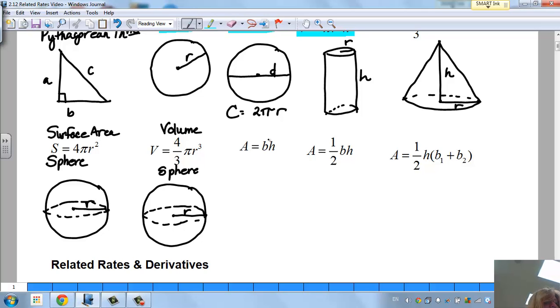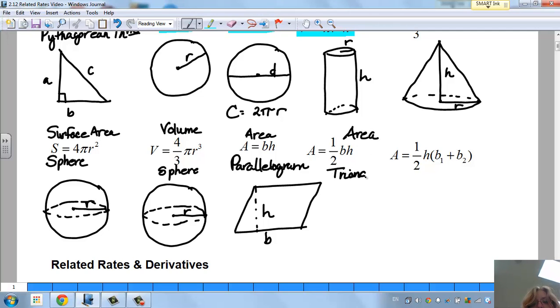A equals base times height. We're talking area here of a parallelogram. A rectangle is a parallelogram. Here's the height here and the base here. Then we have one half base times height, so this is an area relationship or area formula of a triangle. Here's your height and your base. If I take one half of those two multiplied, I'd find the area.